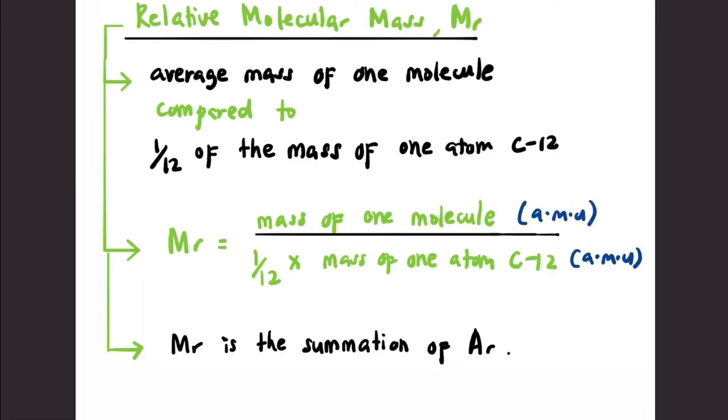As usual, since amu appears in both the numerator and denominator, we can cancel them out, making Mr unitless - no unit. To simplify, Mr is also known as the summation of Ar.